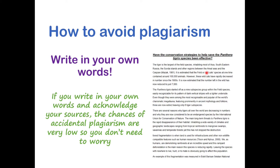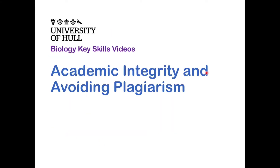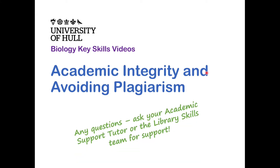If you write in your own words and acknowledge your sources with Harvard style, the chances of accidental plagiarism are incredibly low — the chances of writing exactly the same sentence as someone else is incredibly small. Writing in your own words and acknowledging your sources are the most important things when writing your assignment. If you have any concerns or questions about plagiarism, ask your academic support tutor or the library skills team — they're happy to help. It's really important to write in original words and use Harvard style so you don't get accused of plagiarism.